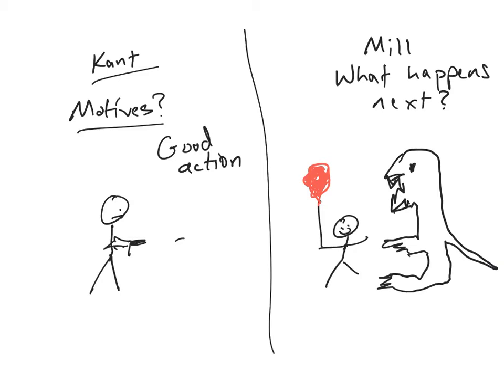For Mill, of course, he wants to know what happens next. Is the man successful in shooting the monster and saving the child? Does the man accidentally hit the child? What happens next will determine whether it's a good action or not — we have to see the results. In this case, let's imagine the successful shooting of the monster, and the blood is spurting out everywhere.